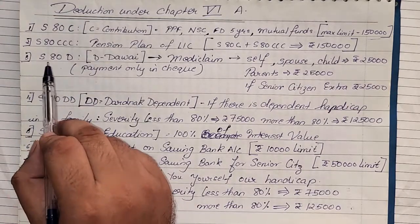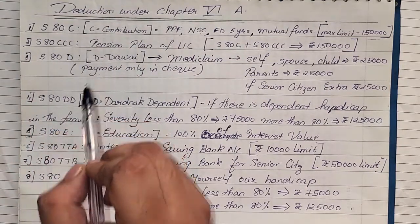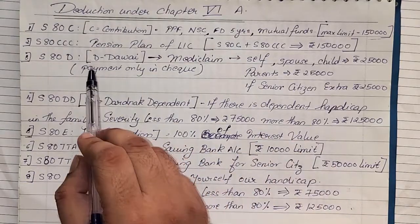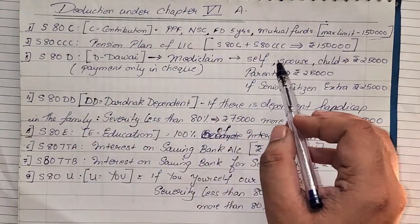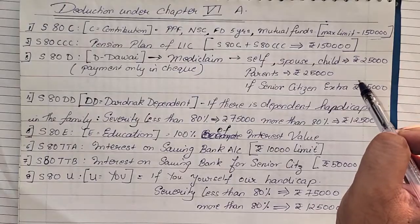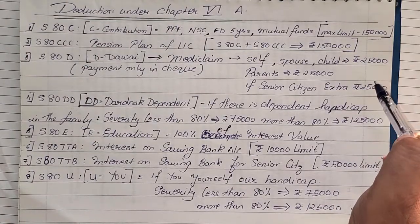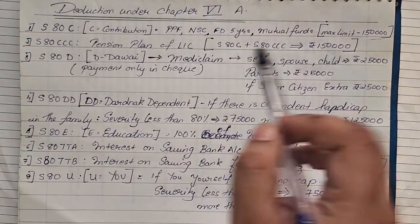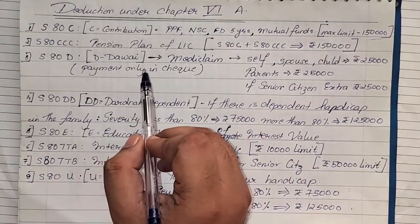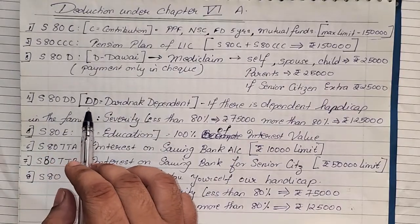Section 80D — 'D' for the wife — relates to medi-claim. For self, spouse, child, and parents you can get a deduction of 25,000 rupees, and an extra 25,000 if there is a senior citizen. Remember, medi-claim has to be paid by cheque only, then you can claim this deduction.